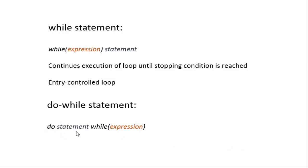The do-while statement takes the general format: do statement while (expression). It will first execute the statement and then test the condition. This means the statement will execute at least once — we cannot skip it. In a while loop, if the condition is false in the first pass, the loop will never execute. But in do-while, the statement executes first, so it runs at least once. Like the while loop, the do-while also contains a feature that alters the expression to eventually become false.